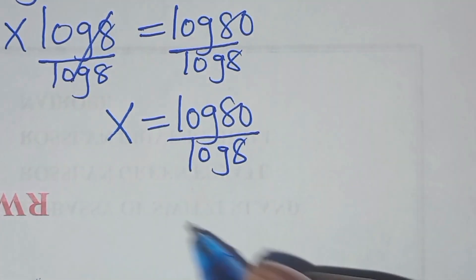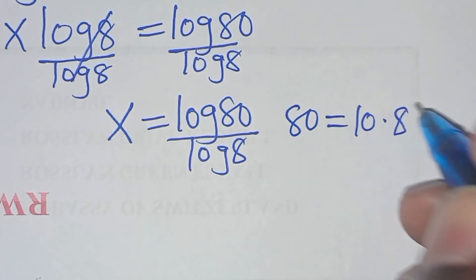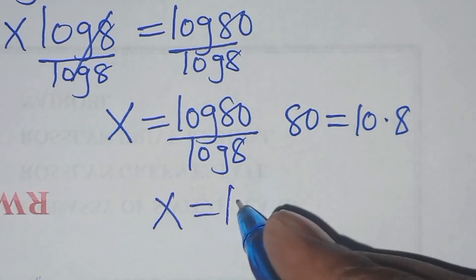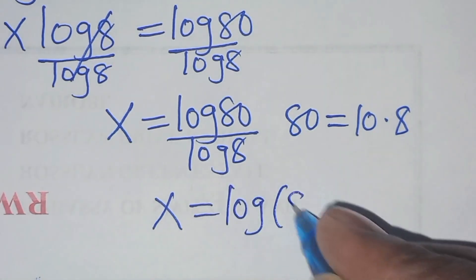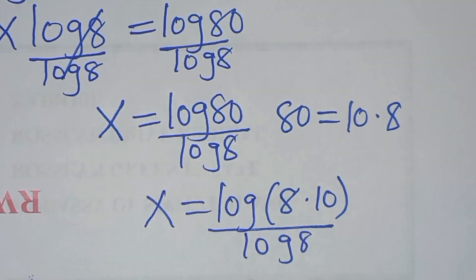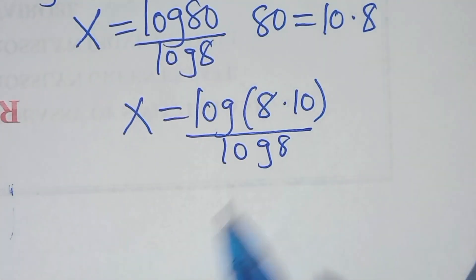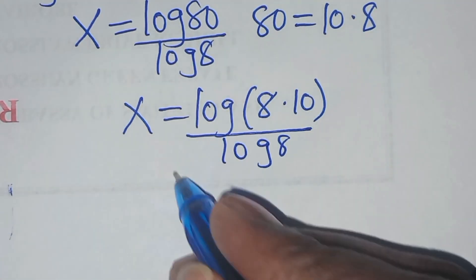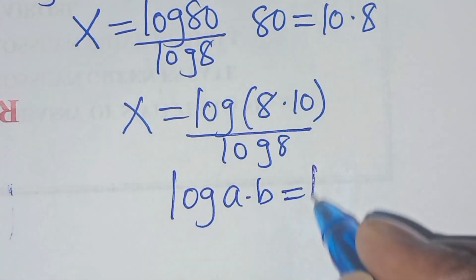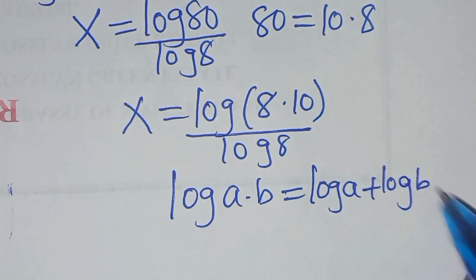Now, we find that we can express 80 as 10 times 8. Substituting this, x is equal to log of 8 times 10, divided by log 8. We note that log(8 × 10) is in the form of log(a × b), which we can express as log a plus log b.